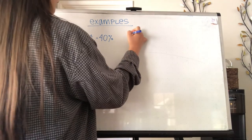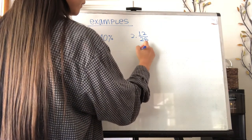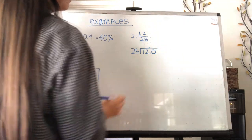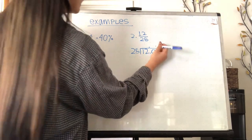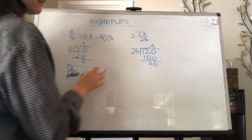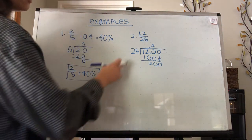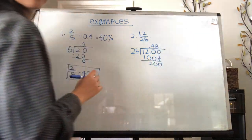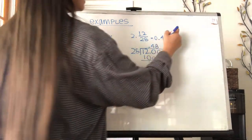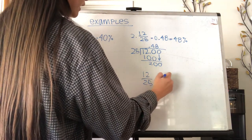The second example: we're given 12 over 25. We convert the fraction to a decimal. 25 can't go into 12, so we add the decimal, bring it up, and add a 0. 25 goes into 120 four times; 25 times 4 is 100. Subtract to get 20. But 25 can't go into 20, so we add another 0 and bring it down. 25 goes into 200 eight times. So the decimal is 0.48. Converting to a percent gives 48%. So 12 over 25 equals 48%.